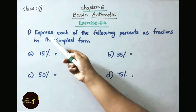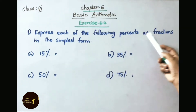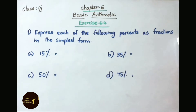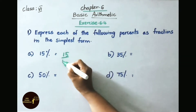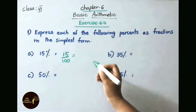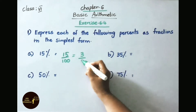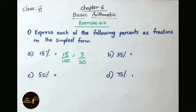Question number 1: express each of the following percents as fractions in the simplest form. Question A: 15 percent. That means 15 by 100. Using the 5 times table — 5 threes are 15, 5 twenties are 100 — so the answer is 3 by 20.